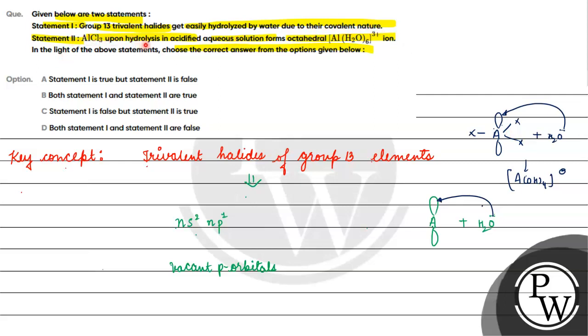Statement 2: AlCl3 upon hydrolysis in acidified aqueous solution forms octahedral Al(H2O)6^3+. This statement is also correct. Aluminum hydrolysis, AlCl3.